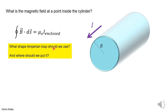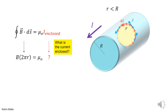Now, what if we want the magnetic field at a point inside the cylinder? We choose the same type of Ampere loop — a circle coaxial with the cylinder — with ds vectors going around in the same direction so the positive sense of the current aligns with the actual current direction. From symmetry, the magnetic field lines are still circles, so the angle between B and ds is zero, B·ds becomes B ds, and B is constant on the circle, giving B times 2πr on the left-hand side.